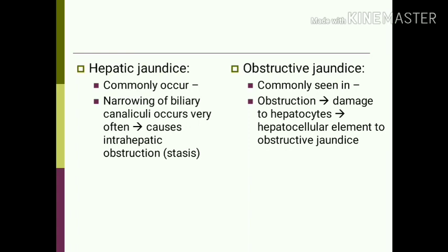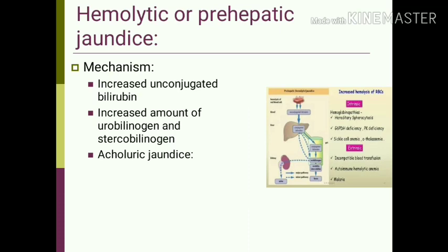In hemolytic or pre-hepatic jaundice, there is excessive breakdown of red blood cells, and therefore increased levels of unconjugated bilirubin. The liver conjugates more bilirubin than normal and excretes it, but the increased amount due to hemolysis means mainly unconjugated bilirubin accumulates. As the liver increases conjugation, there is an increased amount of urobilinogen and stercobilinogen formed.